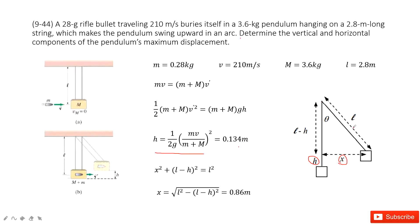One side of the triangle is the length of the pendulum L, and another side is L minus h. So the remaining side is x. We solve this triangle to get the function for x — the displacement in the horizontal component — and then we get the final answer. Thank you.